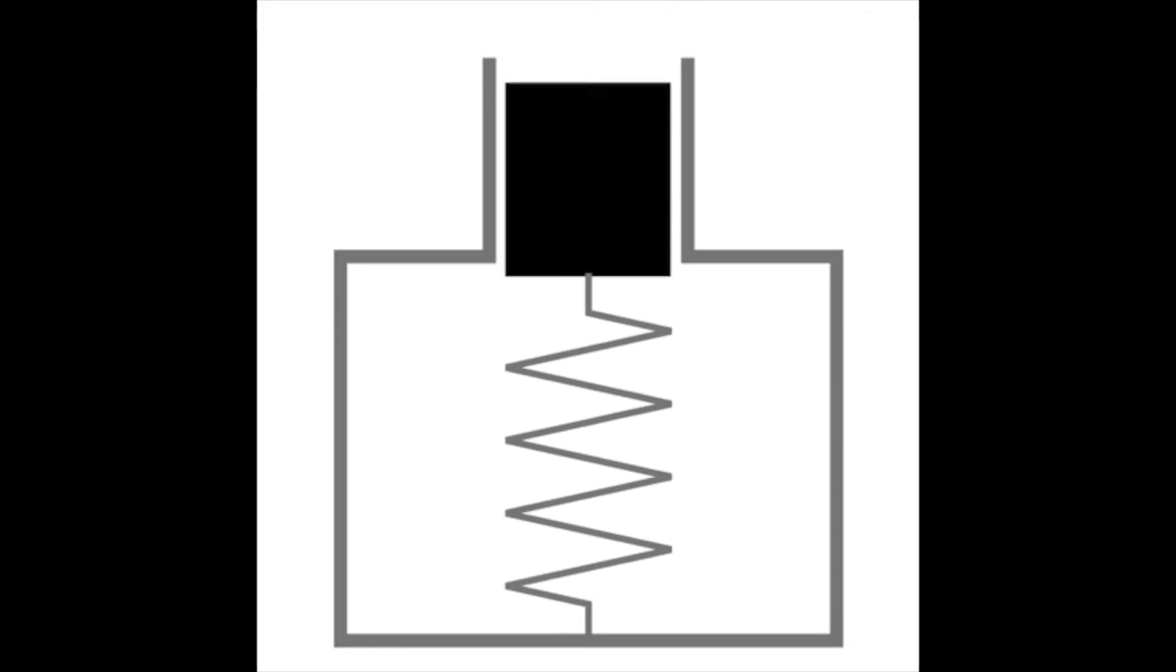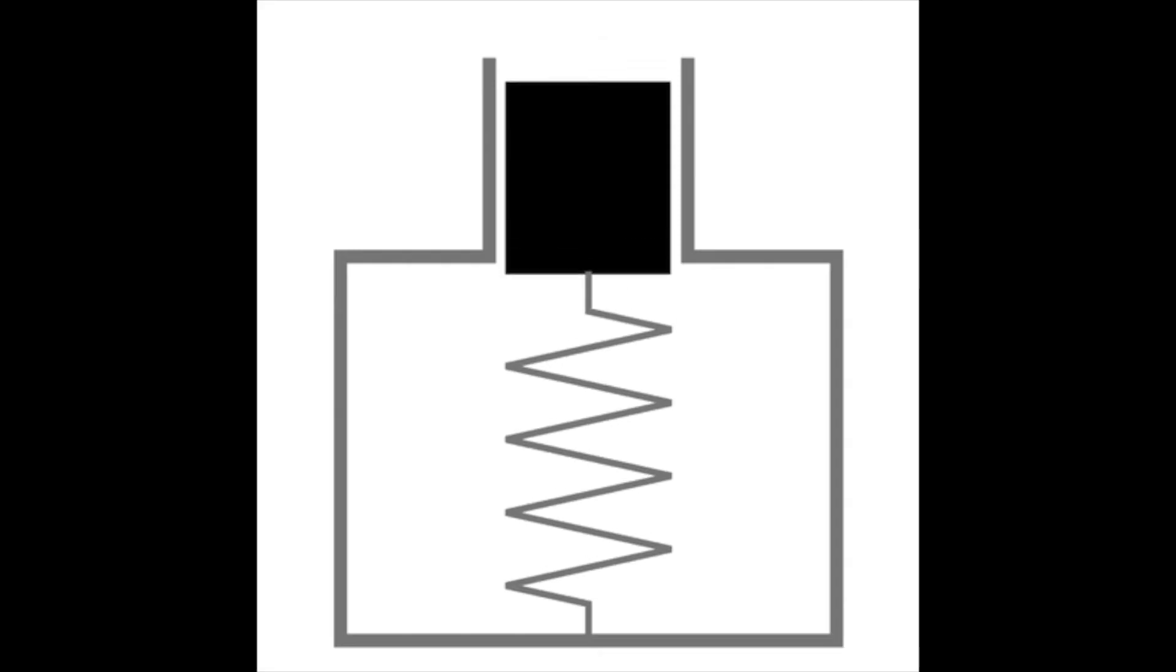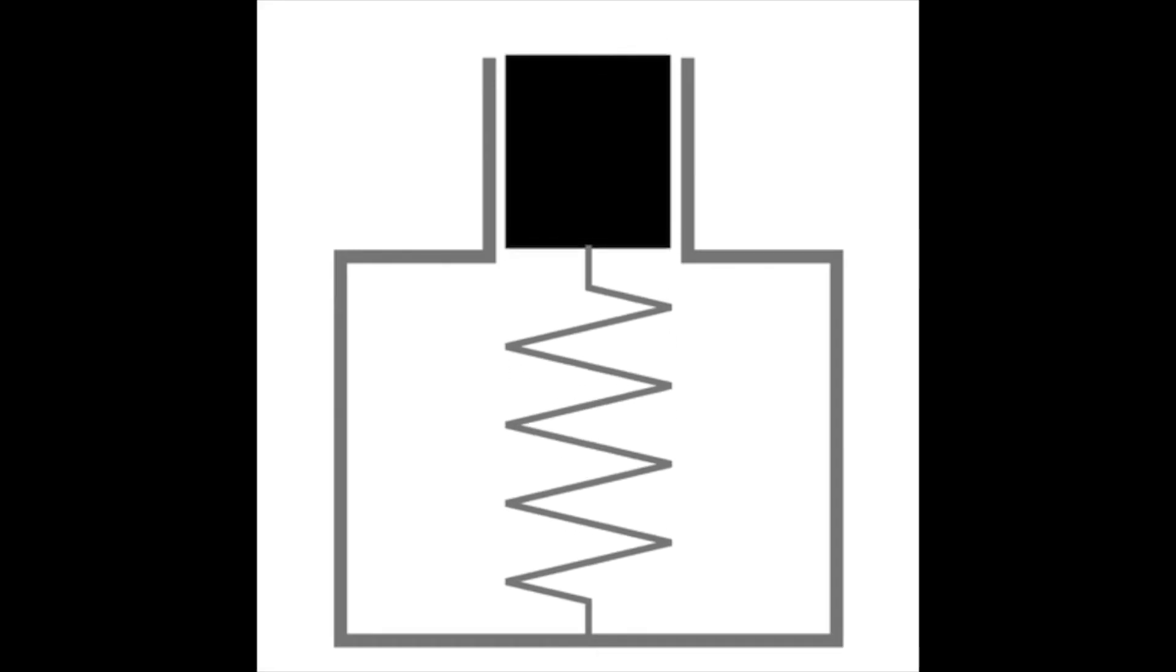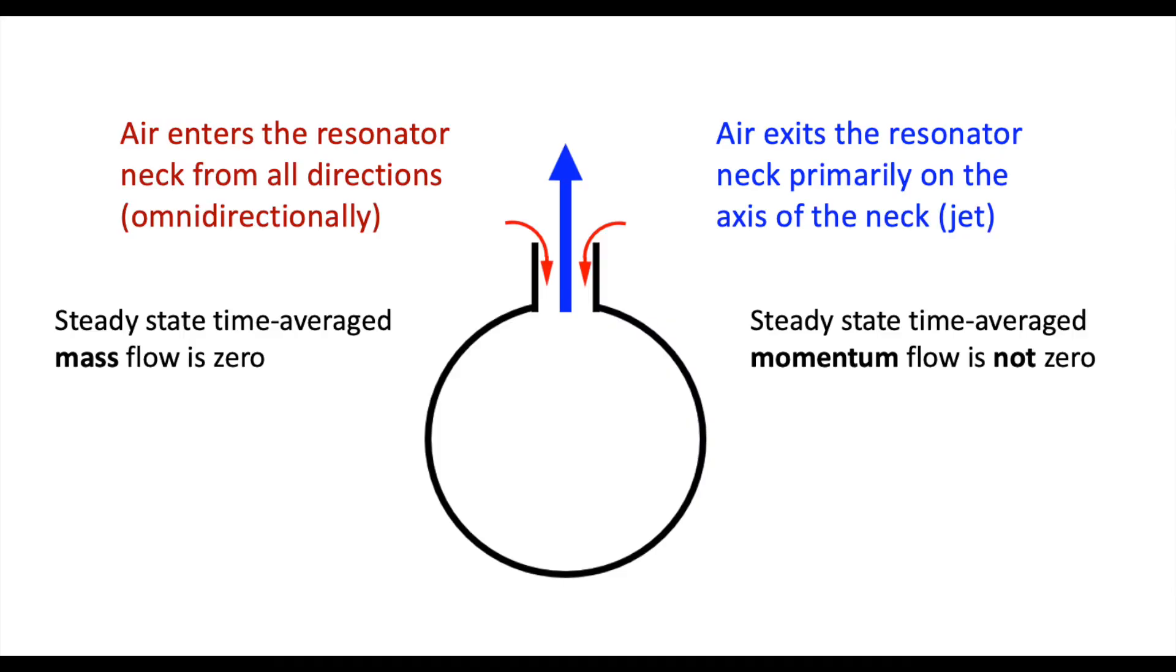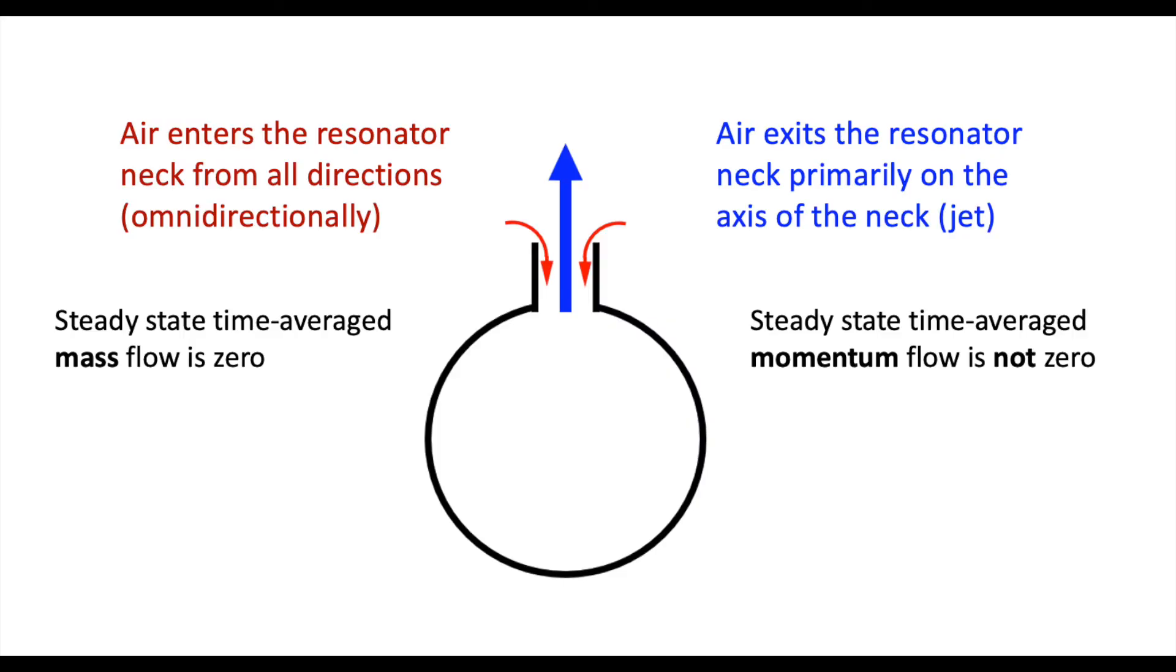Under normal conditions, a Helmholtz resonator acts like a mass spring system with the air in the neck moving back and forth while the spring in the cavity alternately compresses and expands. However, when driven at very large amplitudes, the motion of the air in the neck is no longer simple oscillation. Air enters the resonator mouth around the edges from all directions but exits as a high-velocity jet along the central axis. The steady-state time-averaged mass flow is zero, but the momentum has a net component directed along the central axis causing the thrust.